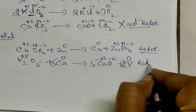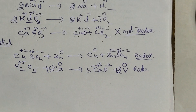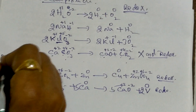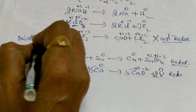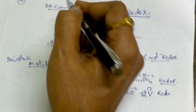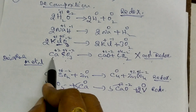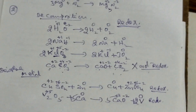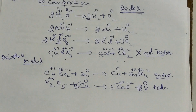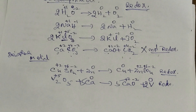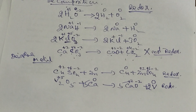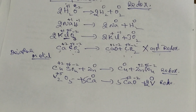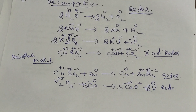We will stop here today. Next we will see metal-non-metal displacement reactions, exceptions where decomposition is not a redox reaction, the normal reactions, disproportionation reactions, and finally the ion-electron transfer method for balancing redox reactions. Thank you.